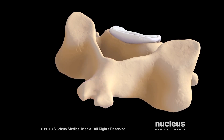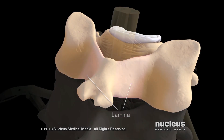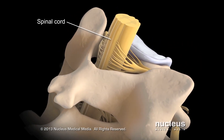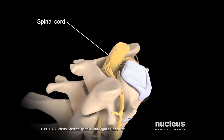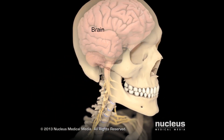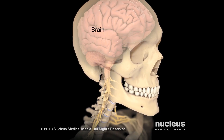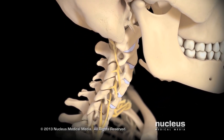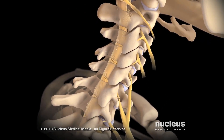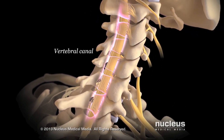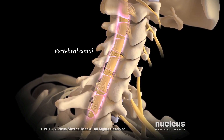On each side of the spinous process is a flat piece of bone called a lamina. The vertebral arch of the vertebra surrounds and protects your spinal cord, a column of nervous tissue connecting your brain to other nerves in your body. Your spinal cord passes through an enclosed space called the vertebral canal, which is formed by the vertebral arches of your vertebrae.